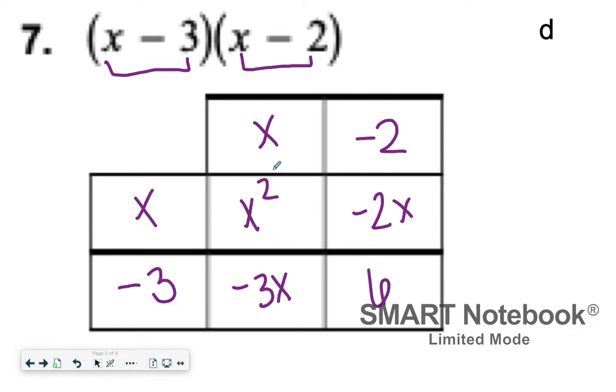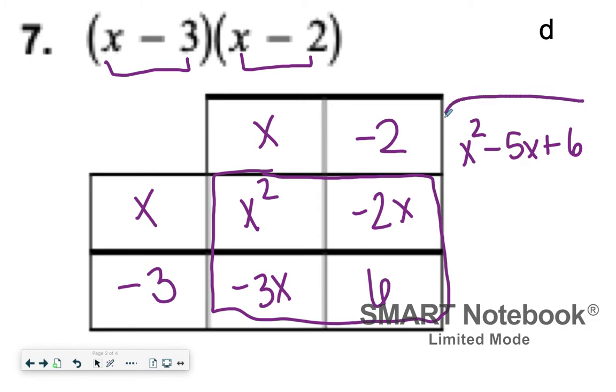So what I'm going to do is now focus on these things, combine any like terms to write my final answer. So X squared does not have any like terms, so it's going to go by itself. Then I have a negative two X and a negative three X. Those can be put together to give me a negative five X. And then six is just by itself, so I'll say plus six. So my answer to number seven on your worksheet is X squared minus five X plus six.